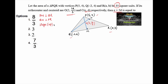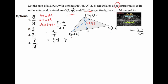Slope of OP is equal to, using the formula (y2 - y1) / (x2 - x1), so here (14/5 - 4) / (2 - 5), which gives (14 - 20)/5 divided by -3, that is -6/5 divided by -3, or 6/5 times 1/3, which equals 2/5. So slope of OP is 2/5, and we can also say slope of PM is 2/5.